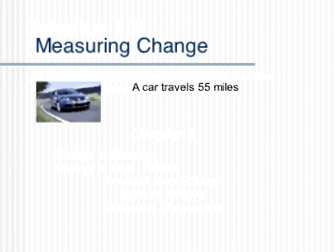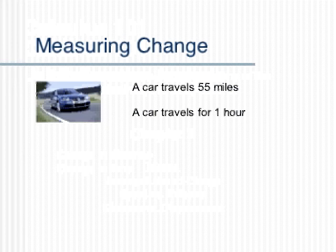A car traveling 55 miles an hour is a measurement of its change of distance, whereas a car traveling for one hour is a measurement in its change in time.